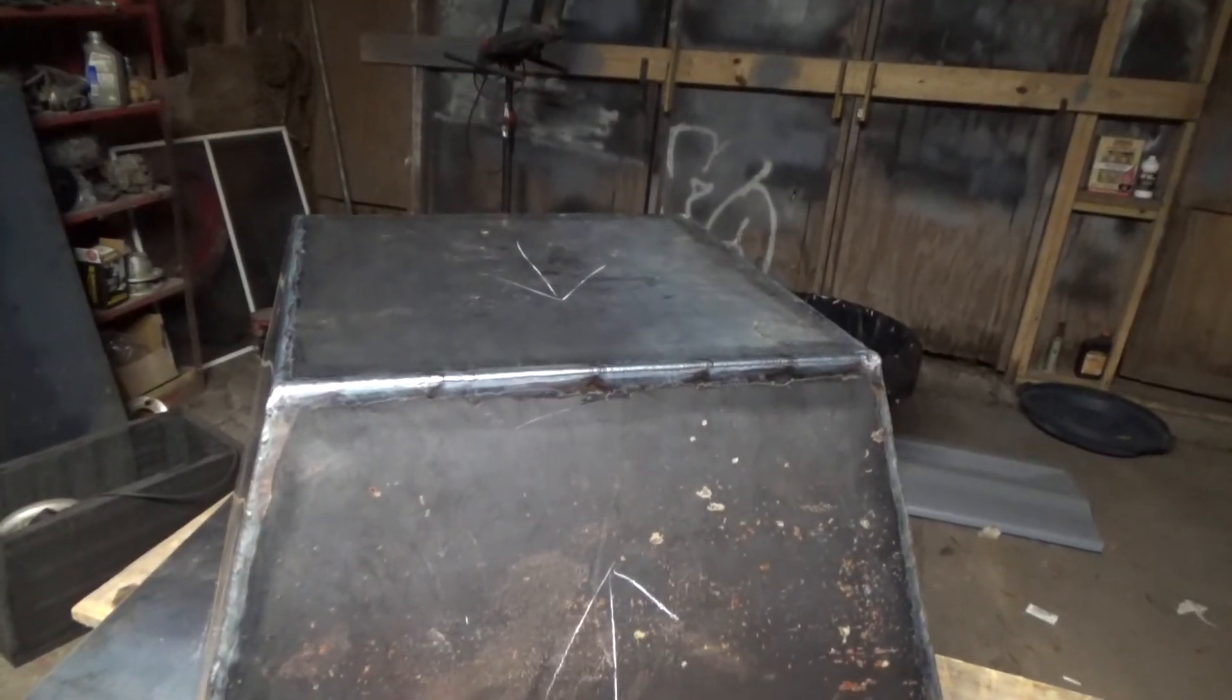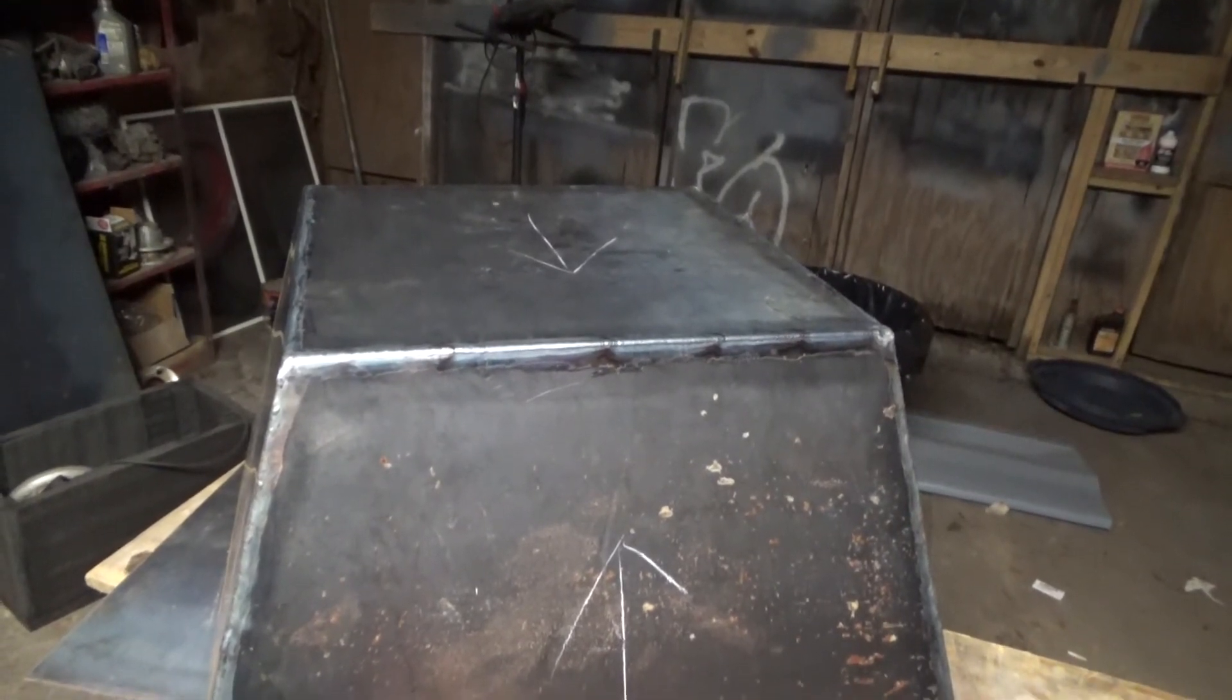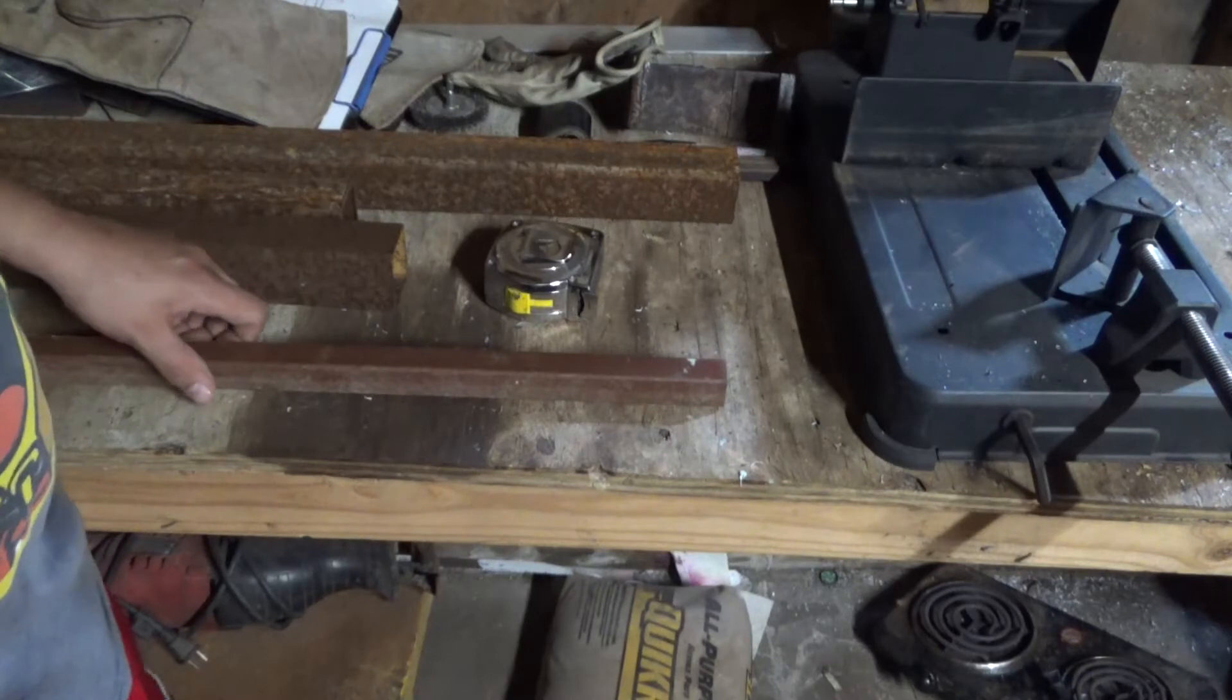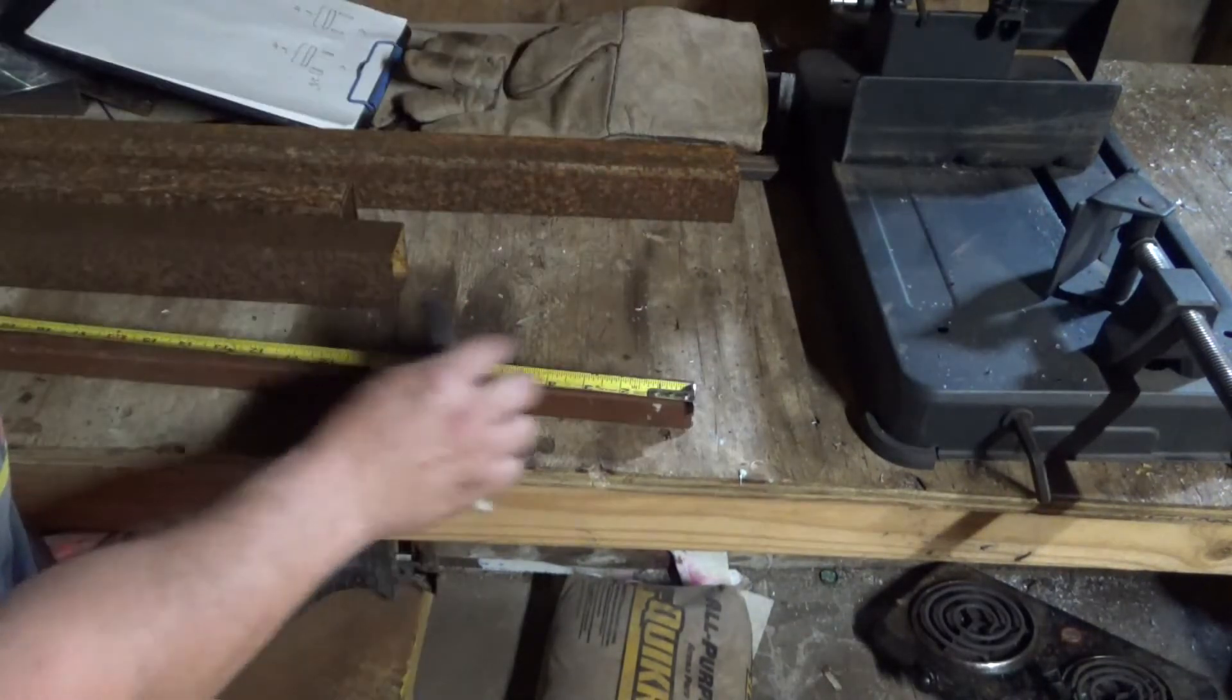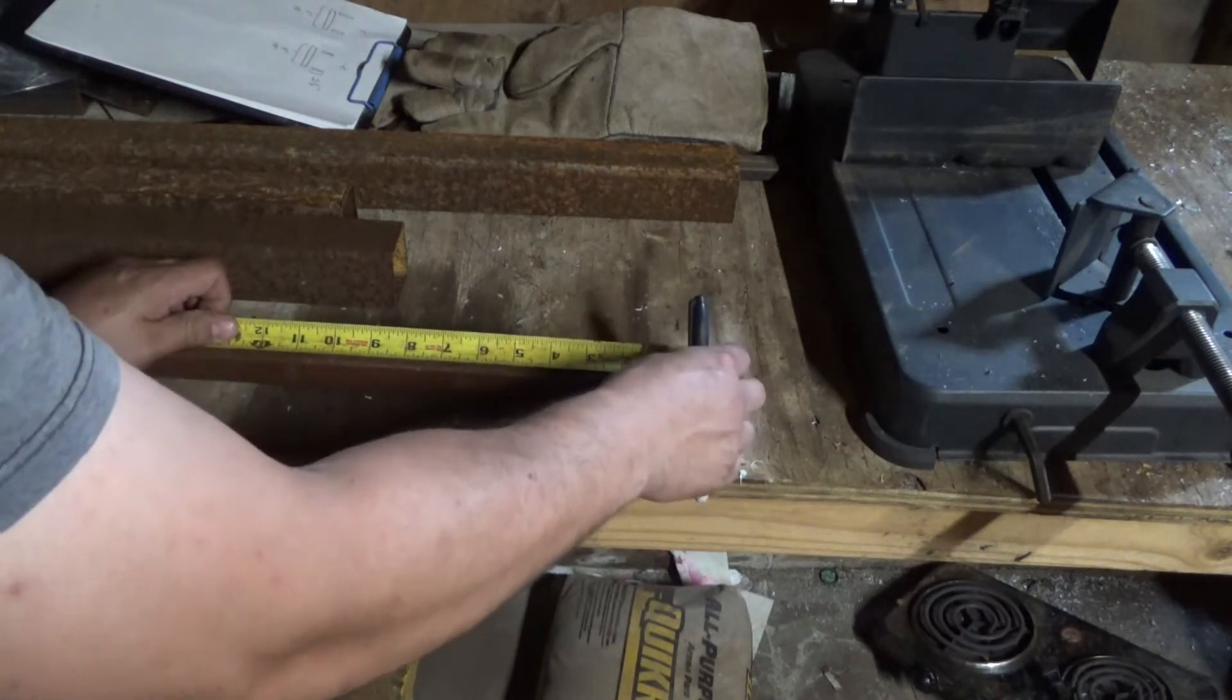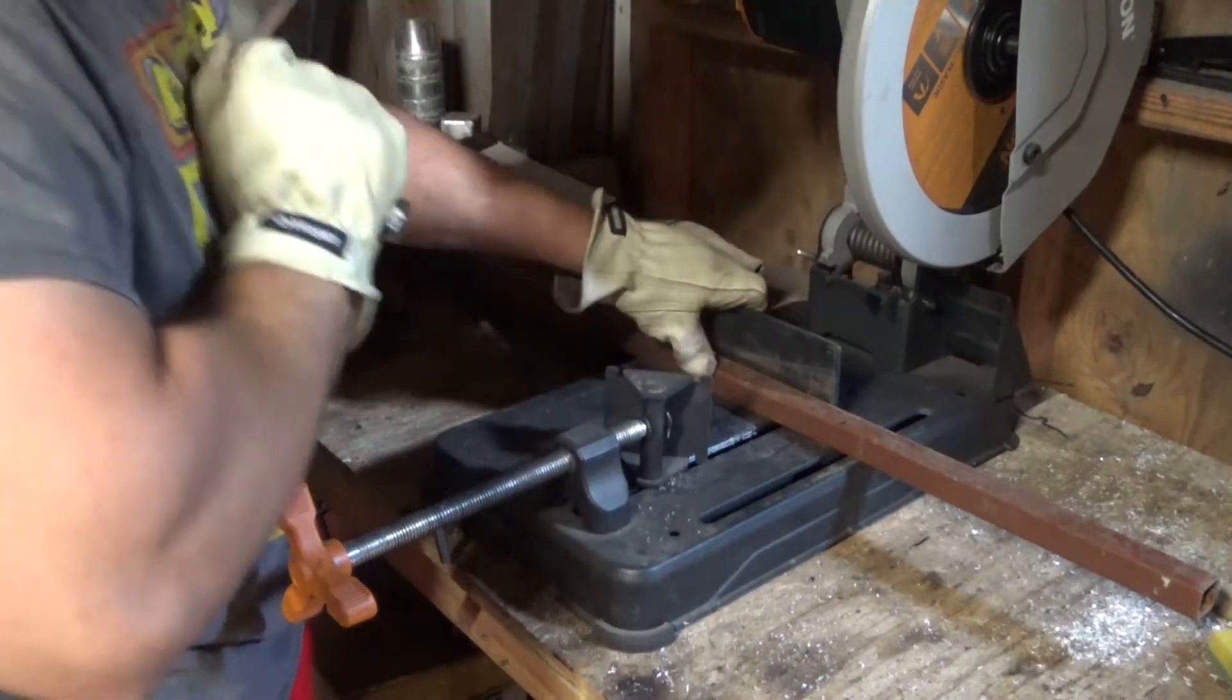Alright, so this took way longer than expected. Got all the welds done. Okay, I'm going to make some handles out of this one inch square tube. I'm going to make the handles a foot long. Take it over here to my chop saw and cut it real quick.